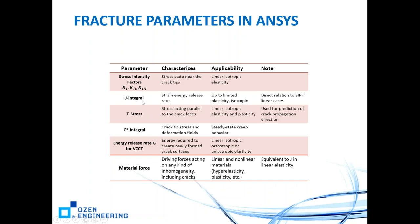J integral equals the stress intensity factor if it is a truly linear elastic case. T stress is the stress acting parallel to the crack faces, applicable in linear isotropic elasticity and plasticity. C star integral is used for steady-state creep behavior — creep happens often in aluminum and titanium. If you have crack growth in aluminum or titanium due to creep, you may want to look into C star integral.